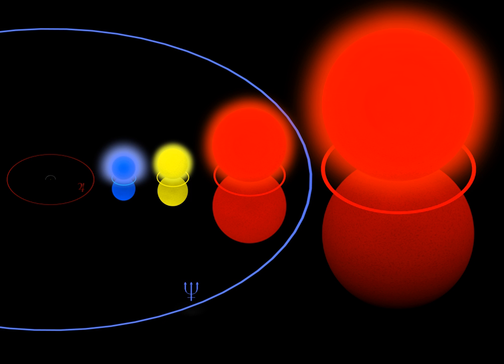More commonly, hypergiants may be classed as Ia-0 or Ia+, but red supergiants are rarely assigned these spectral classifications. Astronomers are mostly interested in these stars because they relate to understanding stellar evolution, especially with star formation, stability, and their expected demise as supernovae.